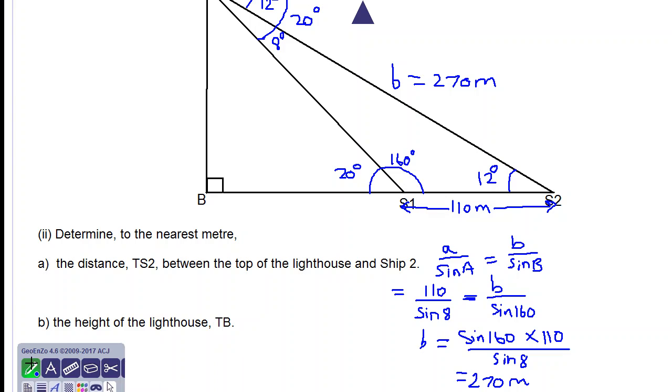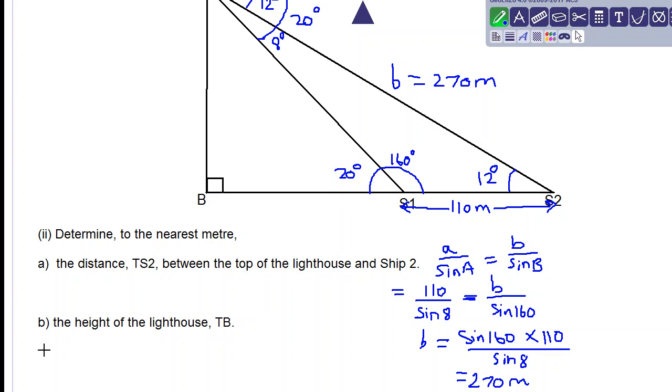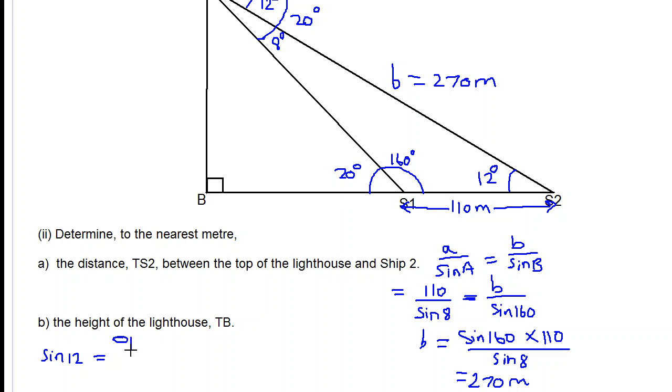And we will call the side the opposite side TB. So we have sine of 12. Sine of 12 degrees is equal to opposite over hypotenuse. And that is equal to TB over 270. We want to find TB. So therefore TB will be equal to 270 multiplied by sine 12 degrees.